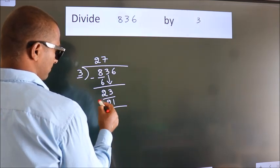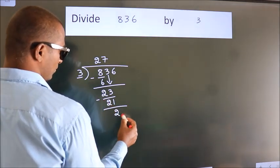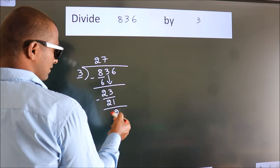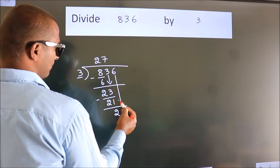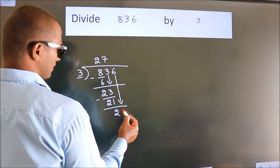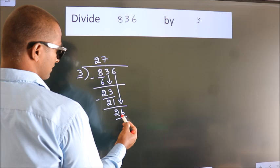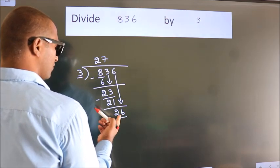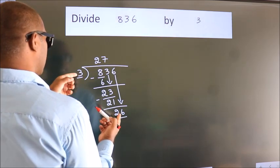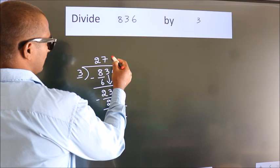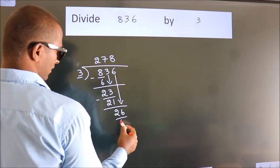Now we subtract. We get 2. After this, bring down the beside number. So 6 down. So 26. A number close to 26 in the 3 table is 3 times 8 equals 24.